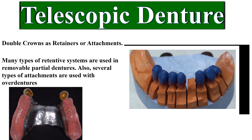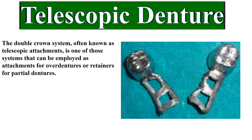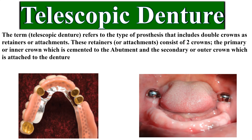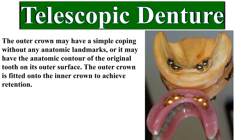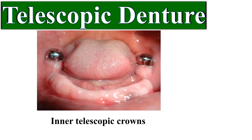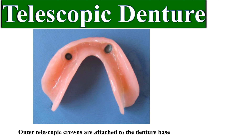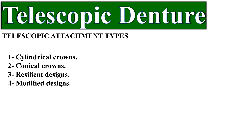Inner telescopic crowns; outer telescopic crowns are attached to the denture base. Telescopic attachment types: 1. Cylindrical crowns, 2. Conical crowns, 3. Resilient designs, 4. Modified designs. Cylindrical crowns — the parallel-sided inner crowns represent the original form of this type of telescopic crown. The friction that exists between the inner and outer crowns is what causes retention.